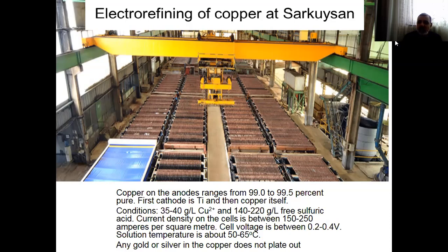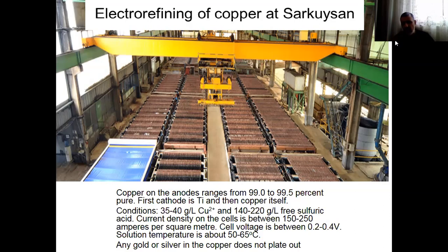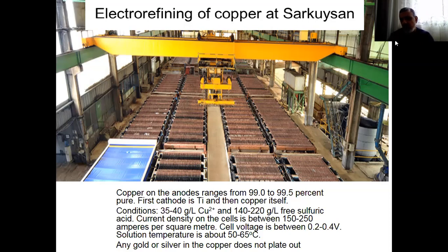Any gold, silver, antimony, platinum, and platinum group metals cannot plate out because the voltage is not enough to dissolve these noble metals — their reduction potential is higher than that of copper and higher than that of hydrogen, so these metals cannot dissolve. Copper on the anode ranges from 99% to 99.5%. As I said before, these are not enough for various applications — we need to further refine and purify them.